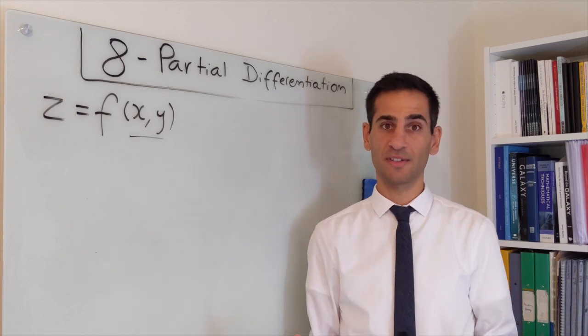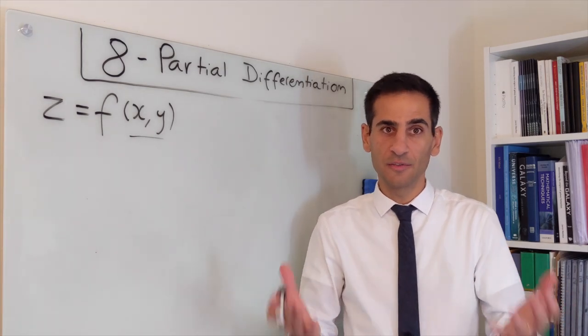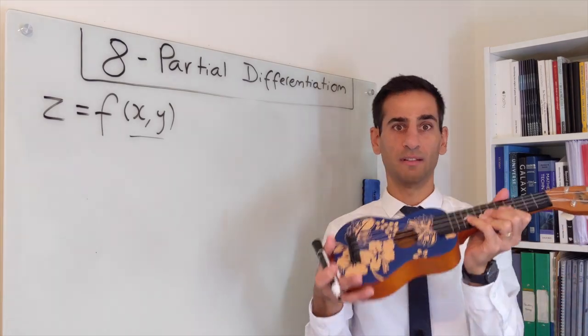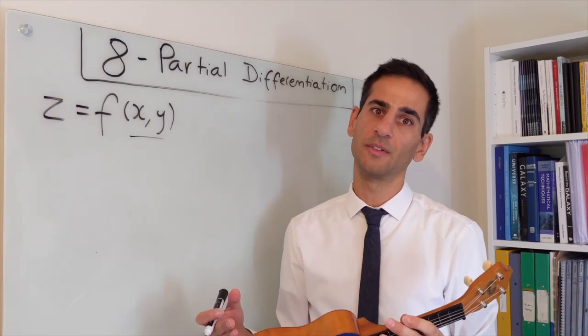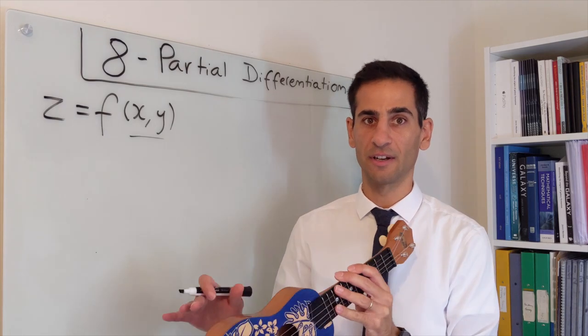We've also seen that some of those surfaces, for example the time traveling ukulele, we can have a look at it and for some reason maybe we want to study how the surface is varying along different directions.